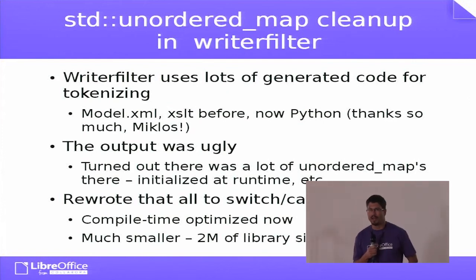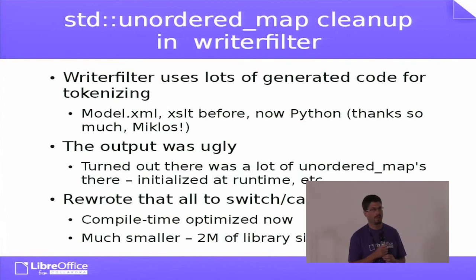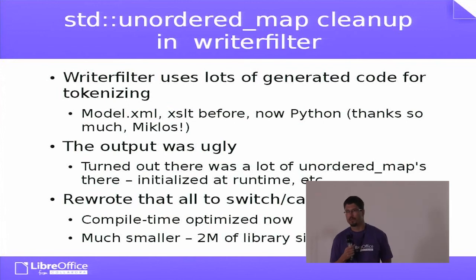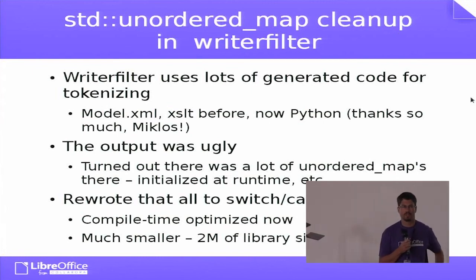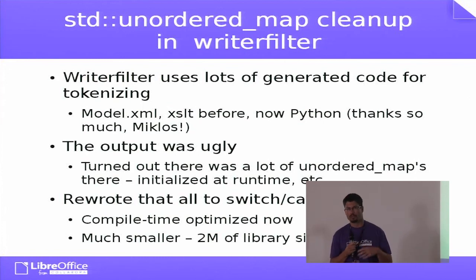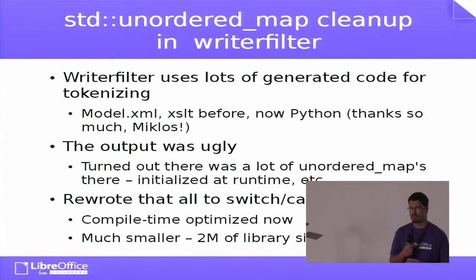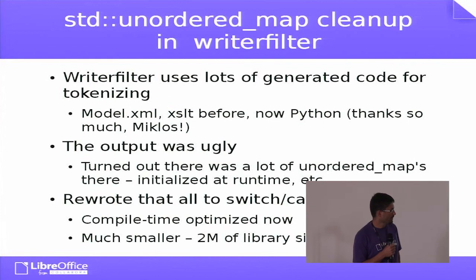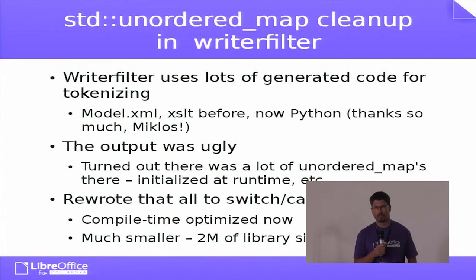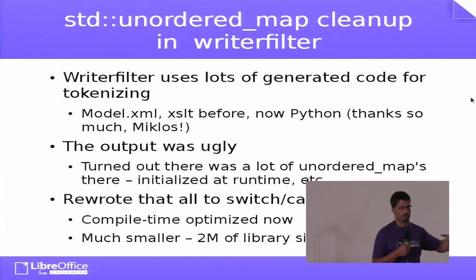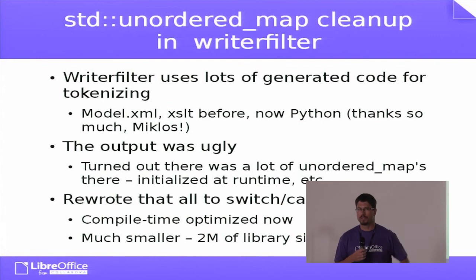When I found more free time, I started with one of the methods and converted it from filling in the boost unordered map into just a normal switch with cases. When I did one it was easy, so I did another and another, and finally we have everything changed from boost unordered maps to using normal compiled switches and cases. The results are great — we saved something like two megabytes of code just by switching to compiled code, and the compiler can also do things like build a search tree on the switches and cases.